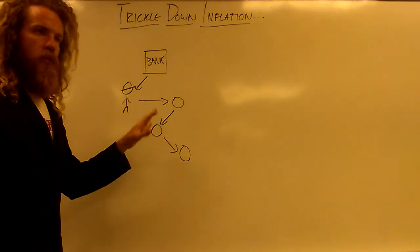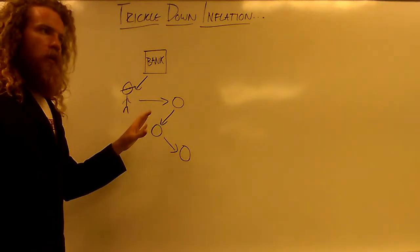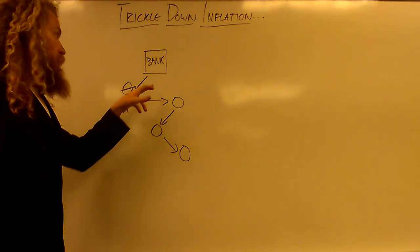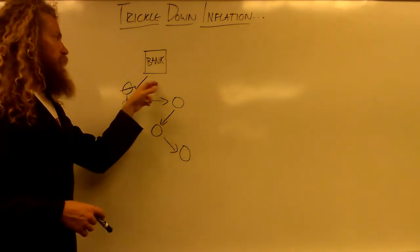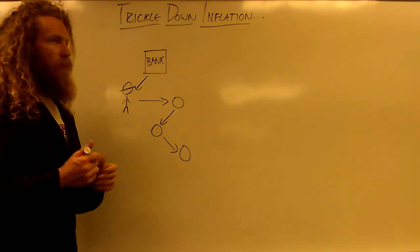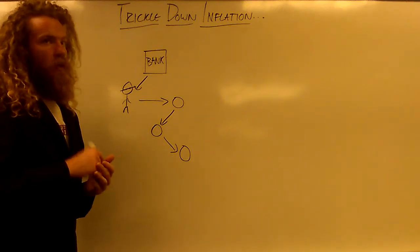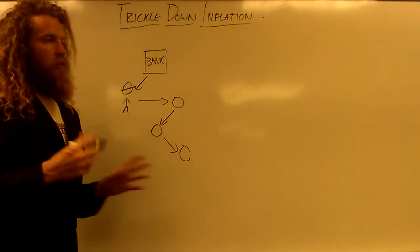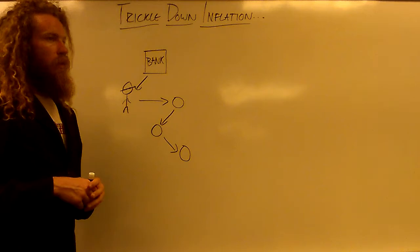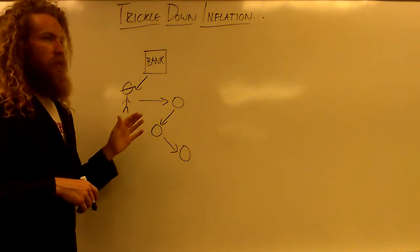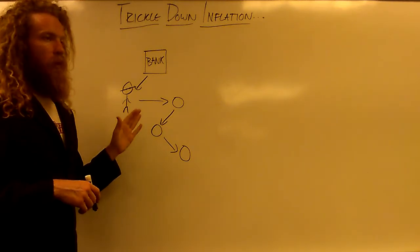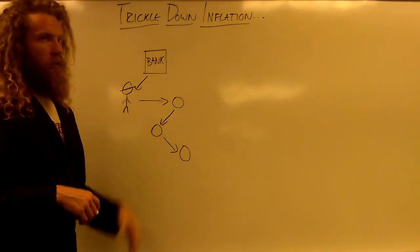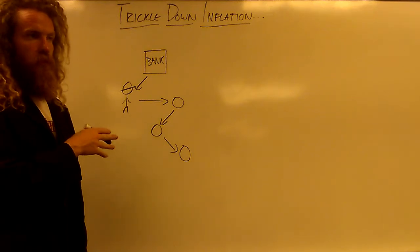Money is created by banks through a process called fractional reserve banking. I've made a video on that — you can watch it. In my opinion, it's literally the biggest problem on planet earth right now: money creation via fractional reserve banking.